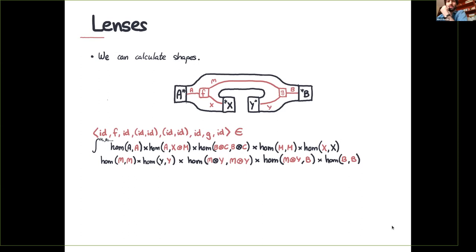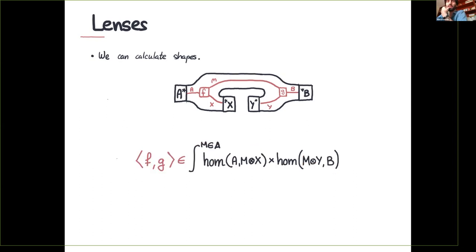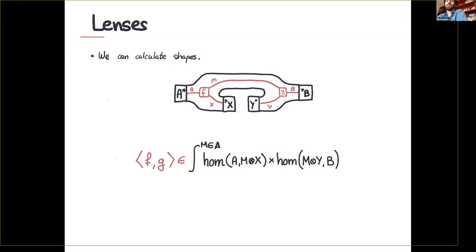We then simplify again using co-end reductions, and what we get back is also the element inside the shape we had before. So now we have not only shapes but also the elements inside the shapes.